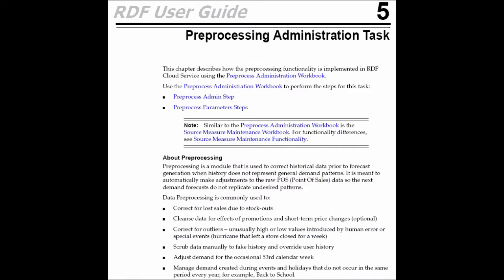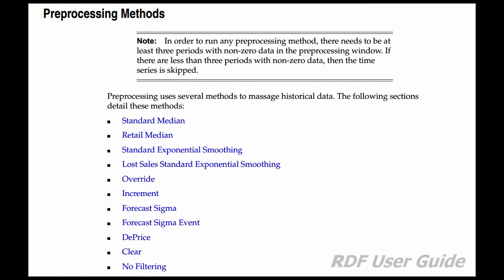The pre-processing administration task describes common uses, when it runs, and why. For the cloud service workflow, you can learn that it is most often implemented in batch. You still control the measure, algorithm, and number of periods. The appendix is a valuable source to help you understand which pre-processing methods to use and when.